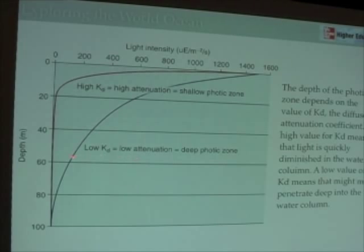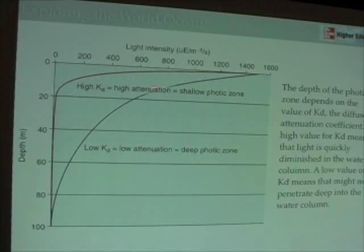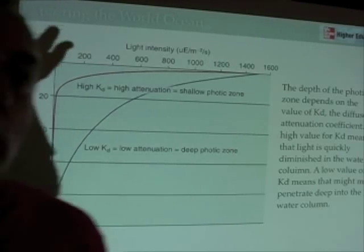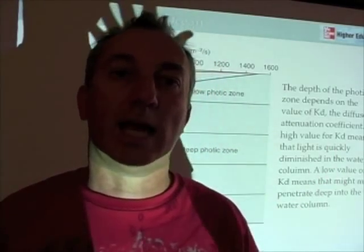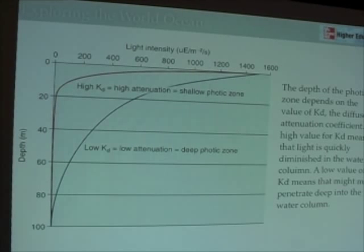On the other hand, when we have a low KD — a small attenuation coefficient in the exponential function — light penetrates very deeply, giving us a deep photic zone. In this case, light reaches all the way down to about 90 to 100 meters. Look at where each of these curves crosses zero, and that tells you the depth of the photic zone. The concentration of absorbers and scatterers determines whether KD is high or low, and whether the photic zone is shallow or deep.